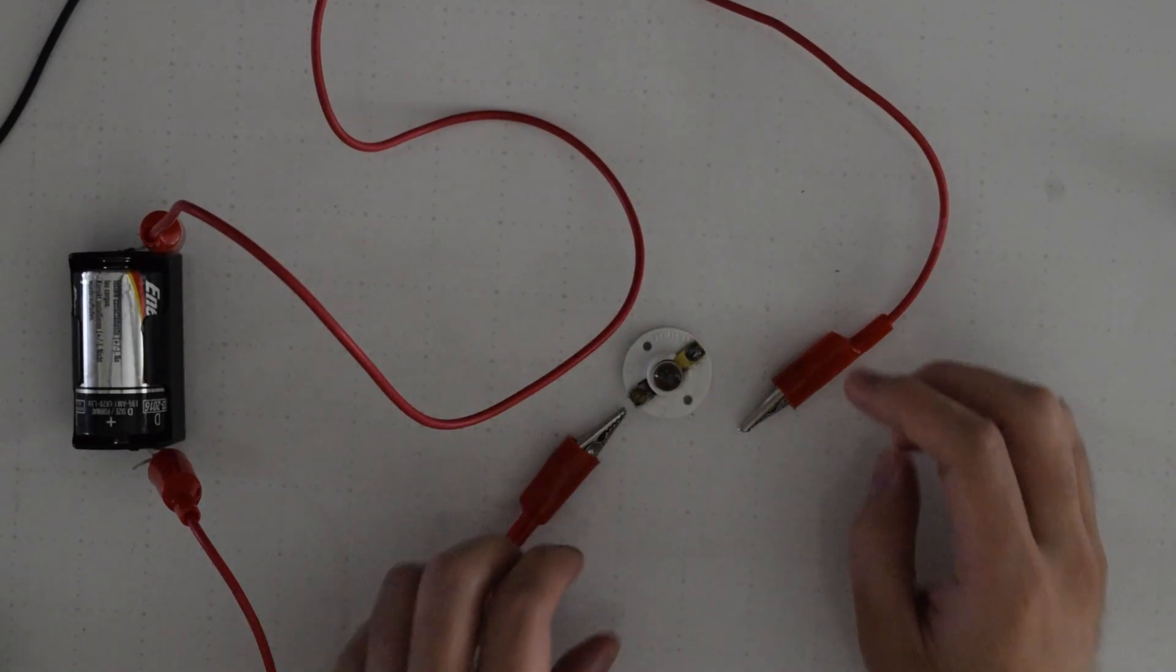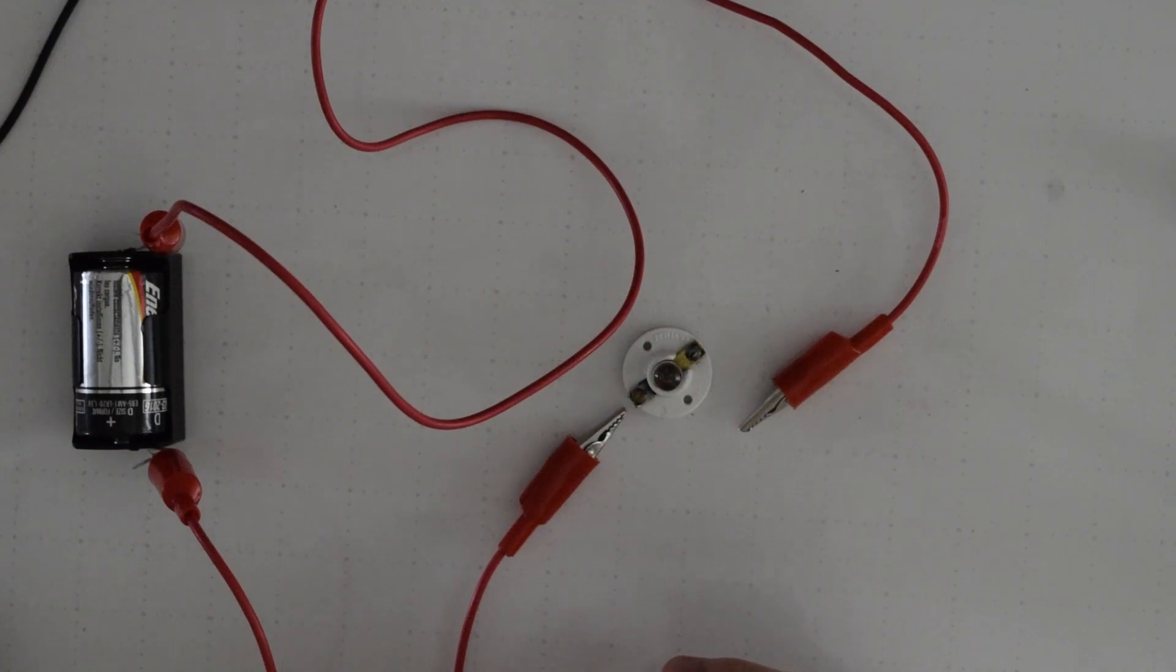Let's take a look at what happens to our light bulbs when we change the number of batteries in our circuit and if we change the configuration of the batteries.